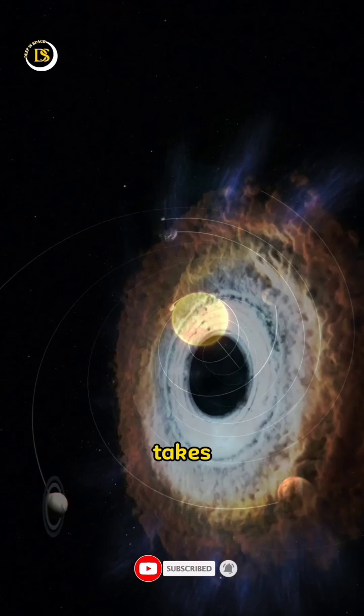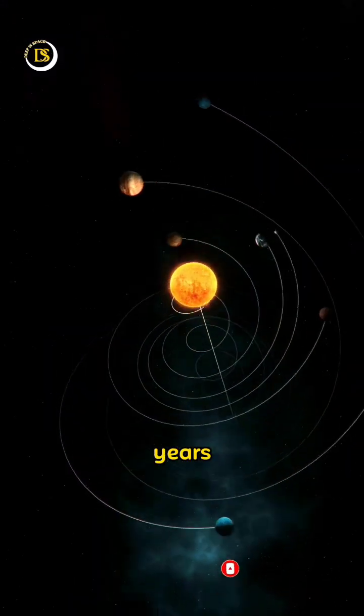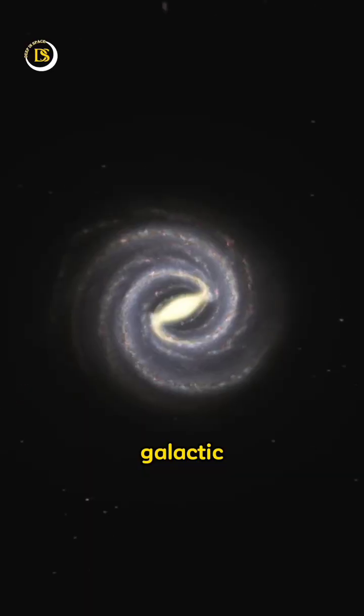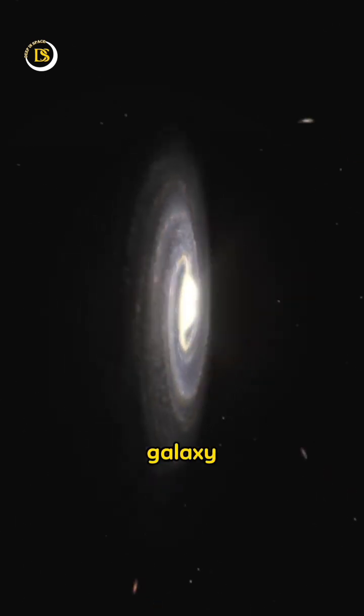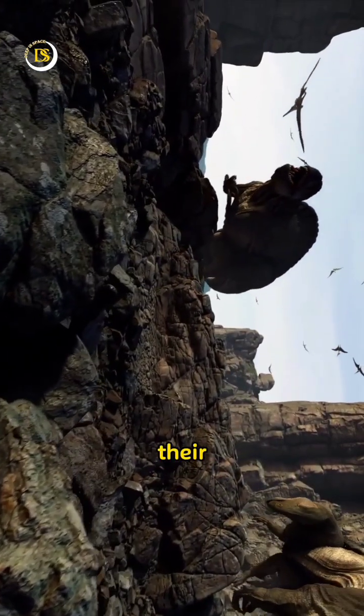And get this, it takes our Earth a mind-boggling 230 million years to complete one orbit around the galactic center. That means the last time we were in this part of the galaxy, dinosaurs were just starting to strut their stuff on Earth.